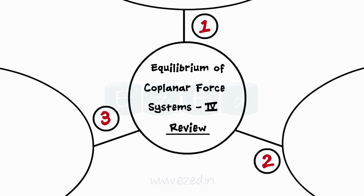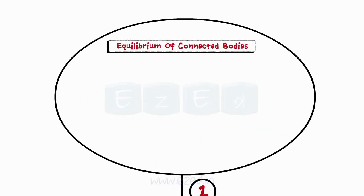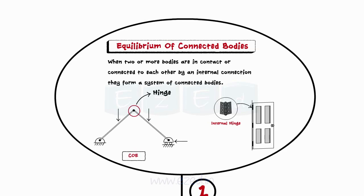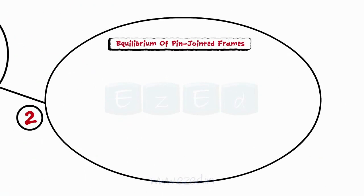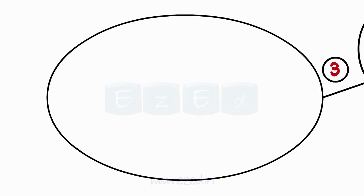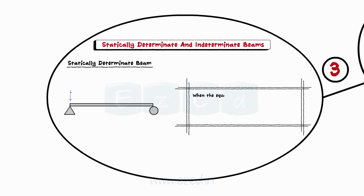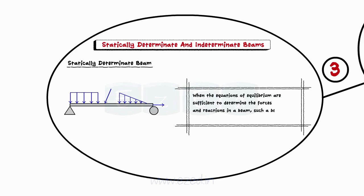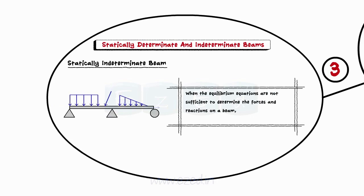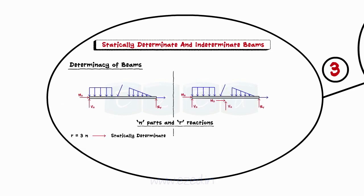In review, we first studied equilibrium of connected bodies: when two or more bodies are connected by an internal connection, they form a system of connected bodies. Next, we studied equilibrium of pin-jointed frames, where members interconnected by pins require finding forces acting on each pin. Finally, we learned about statically determinate beams, where equilibrium equations are sufficient to find all reactions, and statically indeterminate beams, where they are not, along with conditions to identify each type.